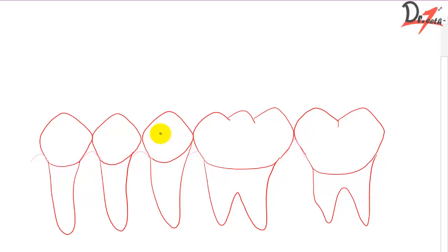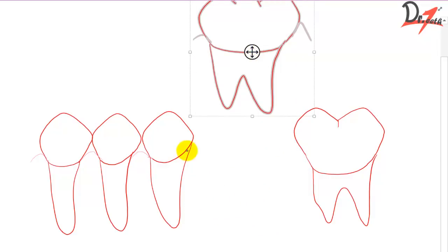For example, if this tooth was missing, let's suppose this tooth is not here. So now this teeth and this teeth will support the prosthesis which will come here.